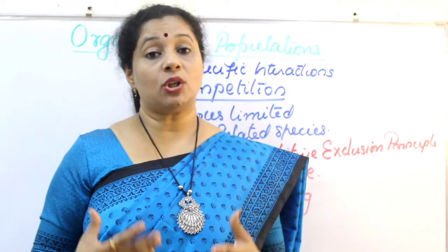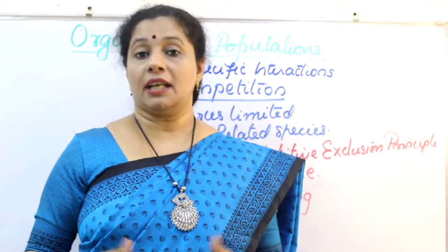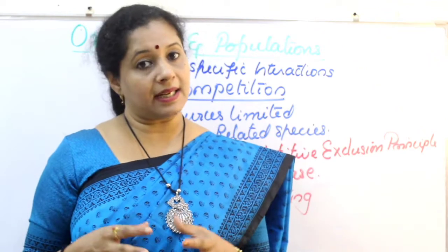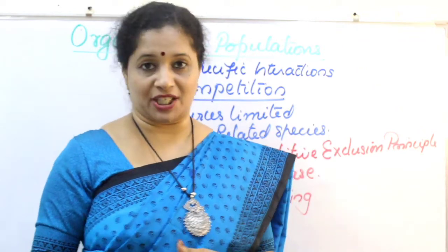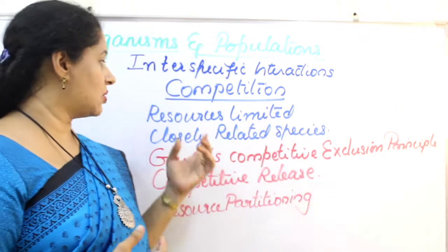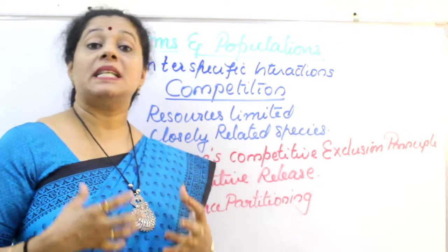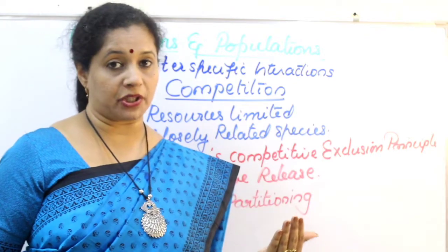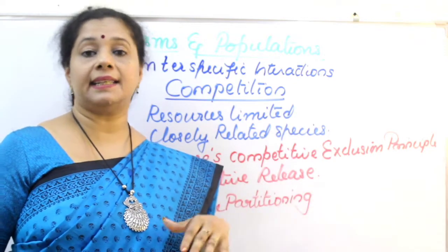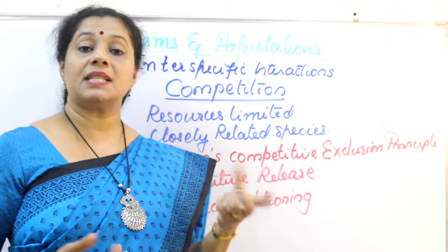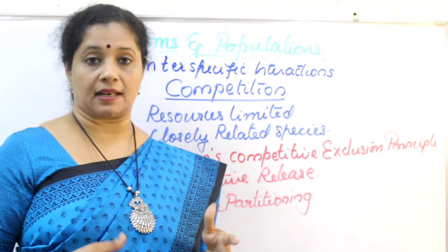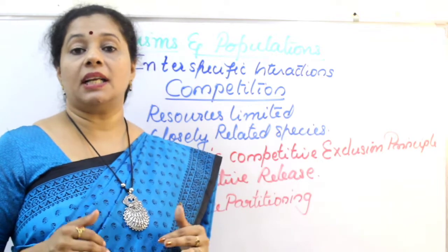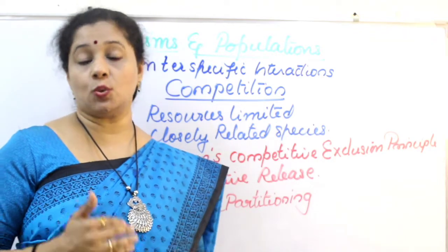Whenever we talk about competition, we feel that only two closely related species can compete. In that aspect, we have two types: intraspecific — competition within a species — and interspecific — competition between two different species. Here in this chapter we are dealing with interspecific competition, between two different species.